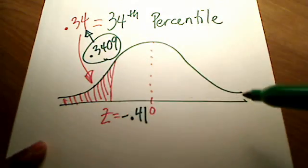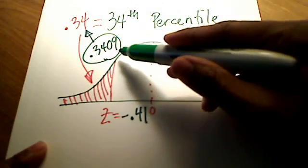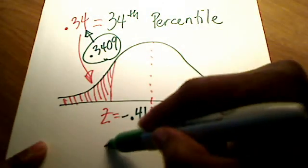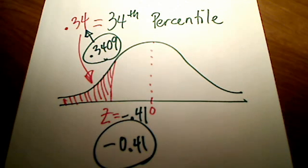So in this case here, this Z score that corresponds to, or the closest thing to the 34th percentile, is negative 0.41. That's what I would enter in on my Math Lab or my homework assignment. So I hope the percentile makes a little bit more sense to you now.